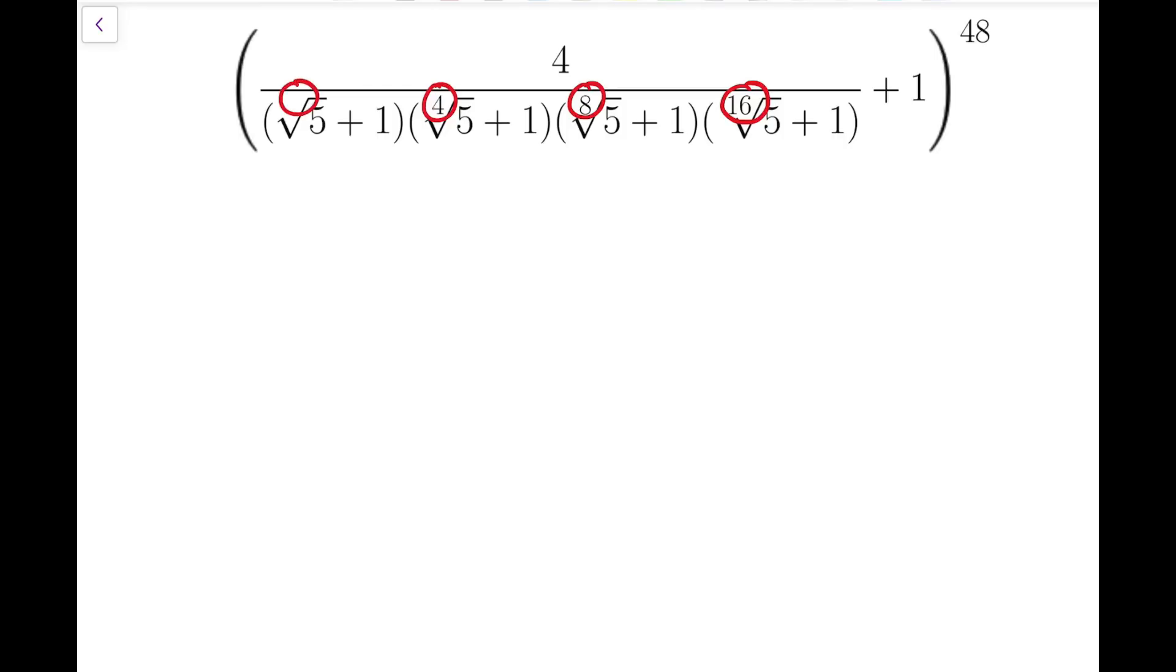So if we write them as indices, they are in fact 5 to the power 1 over 2, 5 to the power 1 over 4, 5 to the power 1 over 8, and 5 to the power 1 over 16. The pattern is that there are all powers of 2, it's just the powers are negative, or 1 over positive powers of 2.